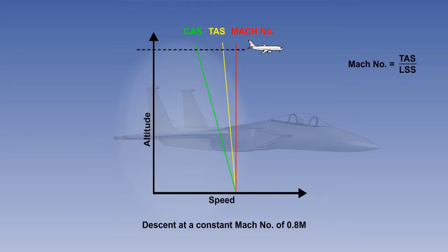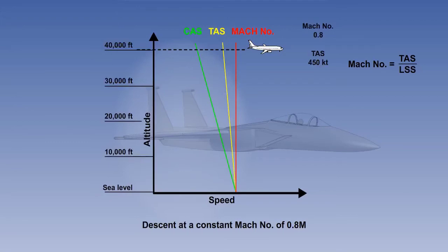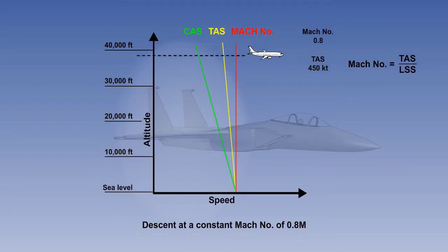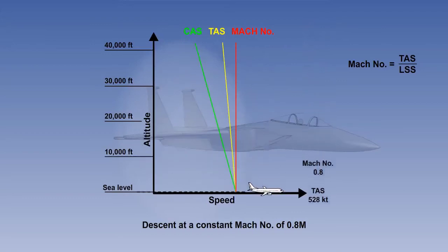Pressure change has a greater effect on air density than temperature change. Therefore, the CAS will increase at a greater rate than the TAS. The best way to see this is to put an actual example on the graph. If we say that at 40,000 feet the Mach number is 0.8M, the calculated TAS will be 450 knots in the standard ISA atmosphere. In a constant descent at 0.8M, the TAS will increase to 528 knots at sea level, which may well be in excess of the maximum normal operating speed for the aircraft.